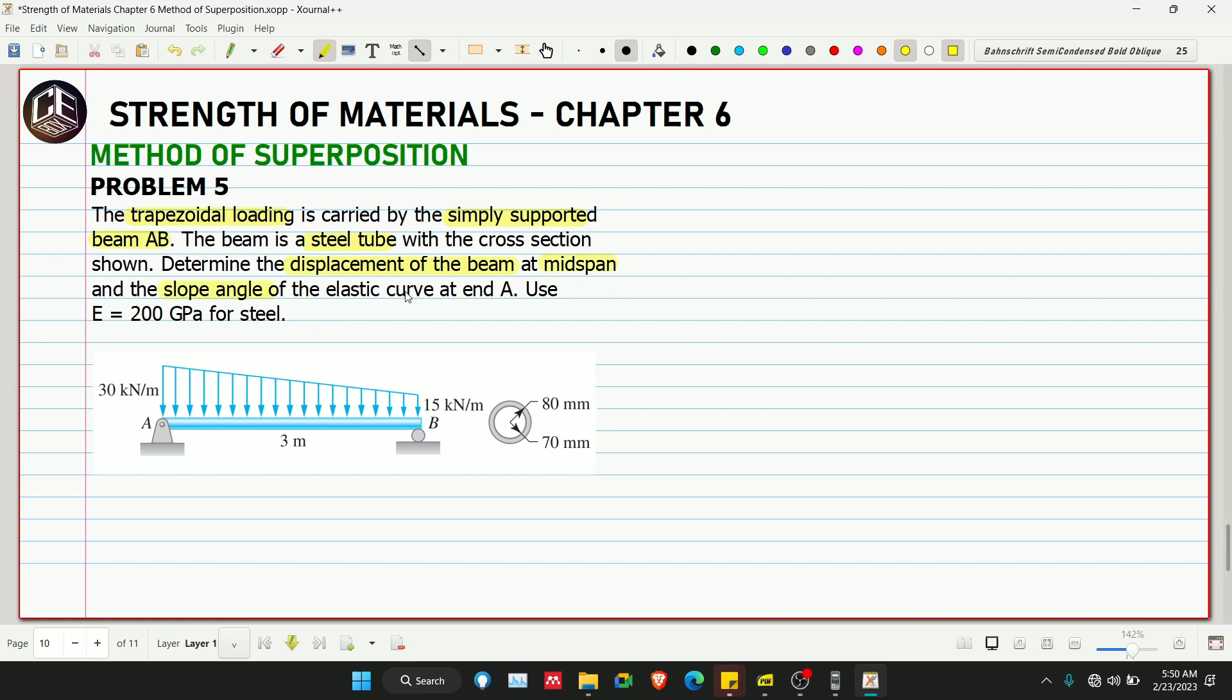Use E equivalent to 200 gigapascals. So for this problem, we already have the value of E, but we don't have the value of I. But actually we do, because the cross-sectional area is given, so we can find the moment of inertia from there.